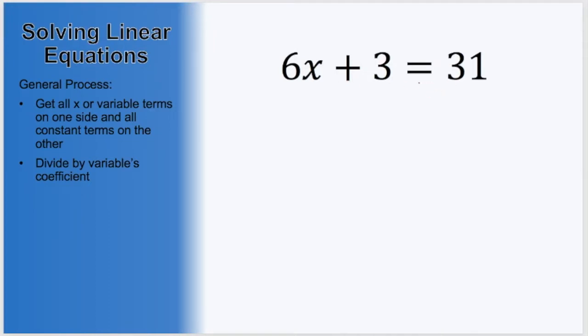For the first step here, our only x term is already on the left side of the equation. With that in mind, it would be smart to move all our constant terms over to the right side. Right now we have the constant plus 3 on the left side, so to move it to the right, we need to cancel it on the left with subtraction, and we have to do that subtraction to both sides. The minus 3 cancels the plus 3 on the left, leaving only 6x is going to be equal to 31 minus 3 is 28.